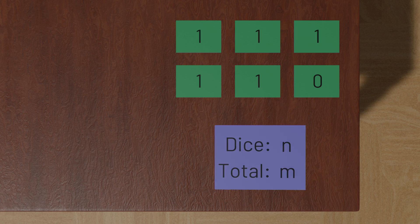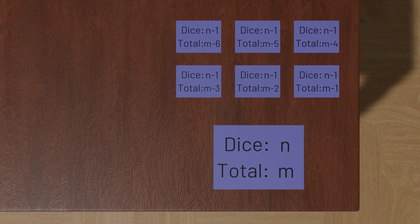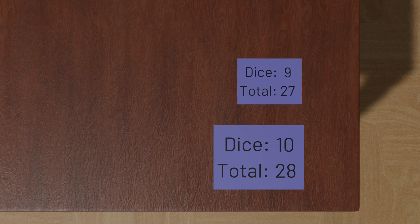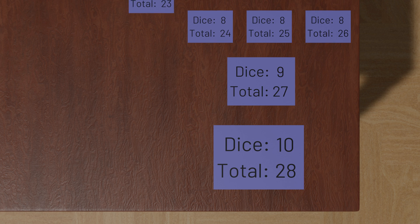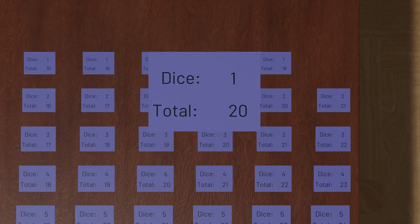We can generalize and say that for n dice to roll a total of m, the first n-1 dice must roll a total of m-1, m-2, m-3, m-4, m-5, or m-6. Adding up each of those six values gives us the answer we want. This gives us a recursive algorithm. To roll a total of 28 with 10 dice, the total of the first 9 dice must be 27, 26, 25, 24, 23, or 22. And how do we calculate how many ways there are to roll a 27 with 9 dice? That's the sum of the number of ways to use 8 dice to roll a 26, 25, 24, 23, 22, or 21. We keep repeating this process until we reach our base case — a single die, where we know the answer.